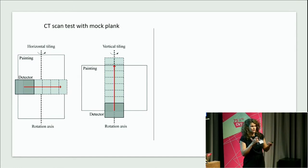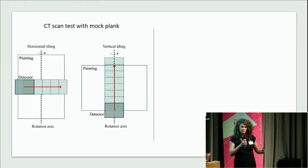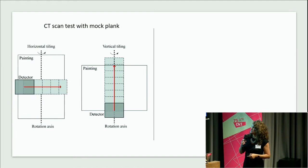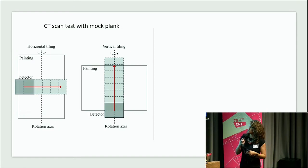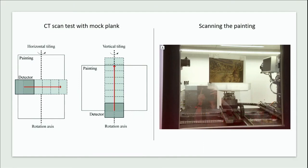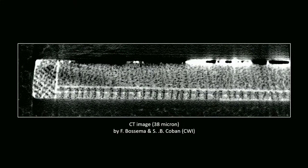The first question that came to mind was: how should we scan it? For dendrochronology we don't need a full 3D image of the object — we just need a cross-section, ideally somewhere where there is not much metal in the paint to avoid distortions. We also thought about tile efficiency, and we decided to go for vertical tiling with the painting placed upright. Francine and Sophia produced a beautiful image, and this is one of the tiles from the outer part.